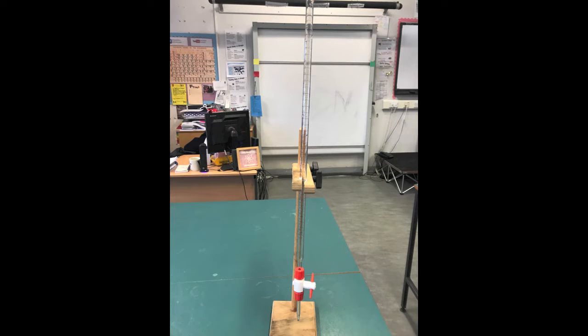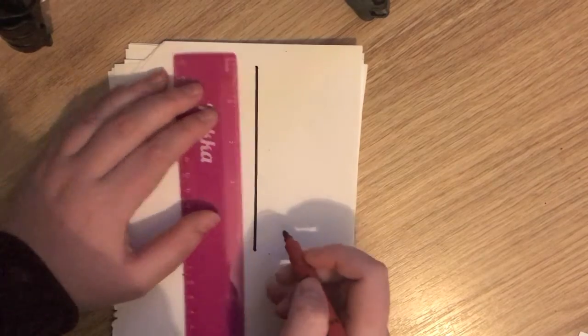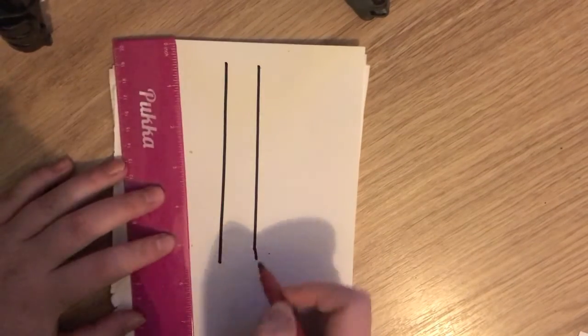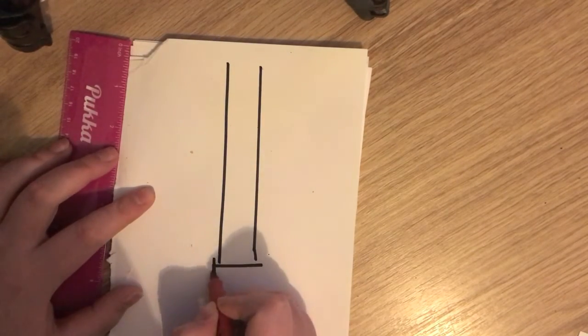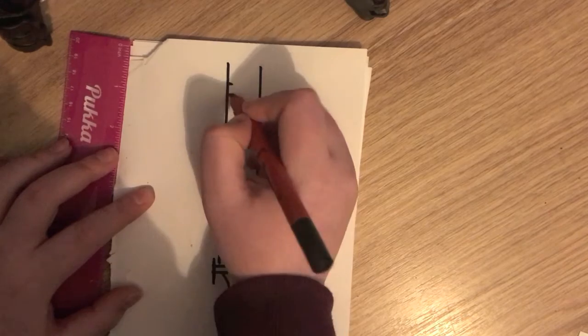Burettes are also used during titration reactions. They have a tap at the bottom to allow liquid to flow and a scale usually running from 0 at the top to 50 at the bottom. They allow accurately known volumes of liquid to be passed into the conical flask. The tap allows the flow to be stopped when the reaction is finished, which can be seen by use of an indicator.